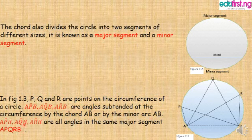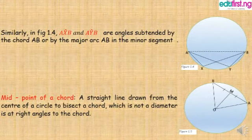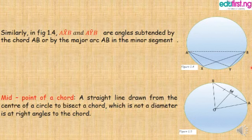APB, AQB, and ARB are all angles in the same major segment, and none of them is inside the minor segment. Similarly, in figure 1.4, AXB and AYB are angles subtended by chord AB or by the major arc AB in the minor segment. So all these shapes here are inside the minor segment.